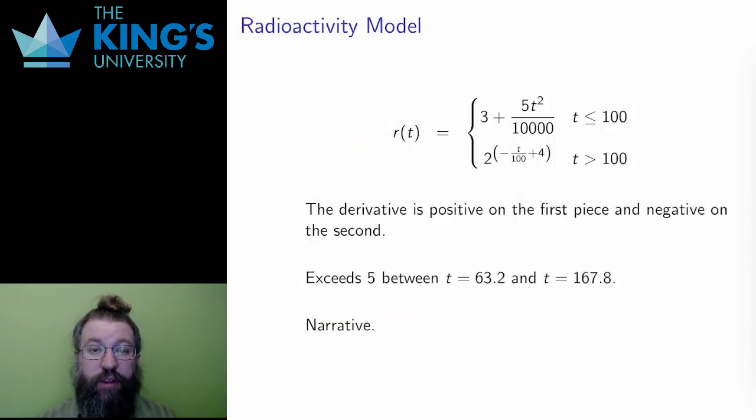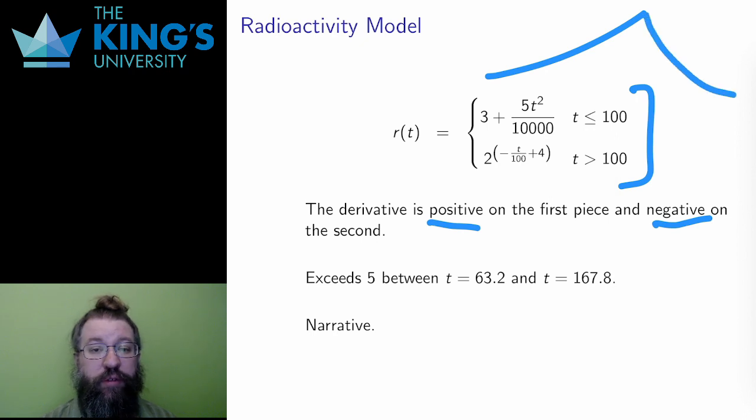I can also look at the derivatives at the rate of change. There are two pieces again, so the derivative is different on each piece. I haven't shown the calculations here, but the derivative is positive on the first piece of the piecewise function and negative on the second. And that tells me that radioactivity is increasing for the first 100 years, reaches a maximum, and then decreases eventually to 0.